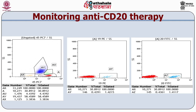Flow cytometry is also useful for monitoring treatment after anti-CD20 therapy. Anti-CD20 monoclonal antibody rituximab was developed as an immunotherapy for B cell lymphomas, targeting CD20 antigen expressed on B cells and eliminating them. B cell depletion with rituximab is increasingly used in clinical transplantation and autoimmune disorders. In this example, lymphocytes are identified based on bright CD45 and low side scatter, and CD19 and CD20 antibodies identify remaining B cells after anti-CD20 therapy.